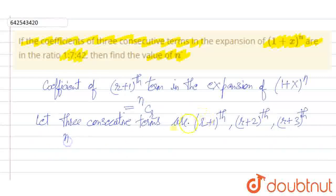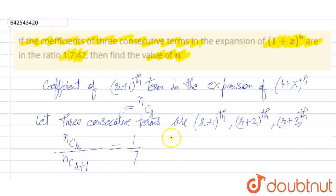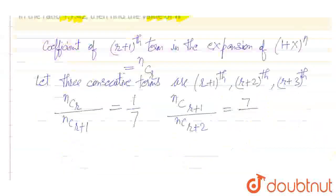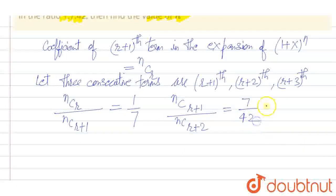The coefficient of the (r+1)th term is nCr, and the coefficient of the (r+2)th term is nC(r+1). This ratio equals 1:7. And the coefficient of the (r+2)th term nC(r+1) divided by the coefficient of the (r+3)th term nC(r+2) equals 7:42, which is 1:6. These are the two ratios given.